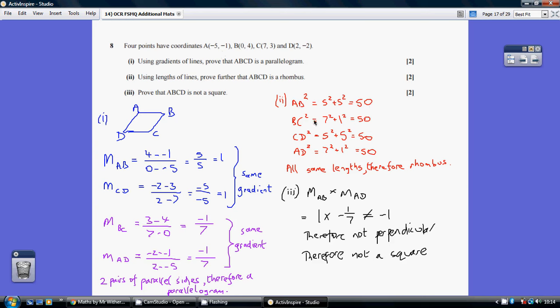AB squared is 50, BC squared is 50, and so on. You could say AB is root 50, BC is root 50 if you prefer. You need to show that all have the same lengths, therefore it's a rhombus.